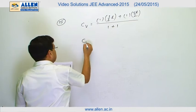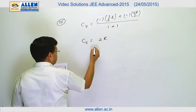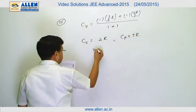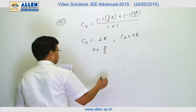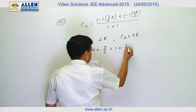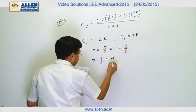So Cv will be equal to 2R. Cp for this mixture is equal to 3R. Gamma is equal to 3 by 2, which is equal to 1 plus 2 by f. From here, f will be equal to 4.